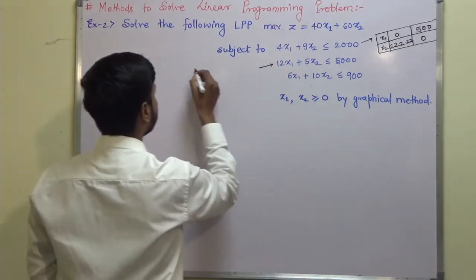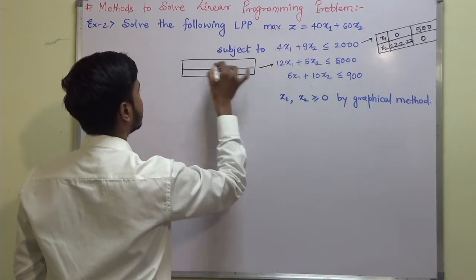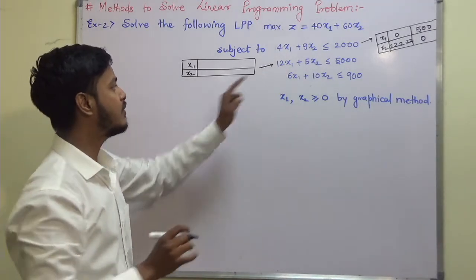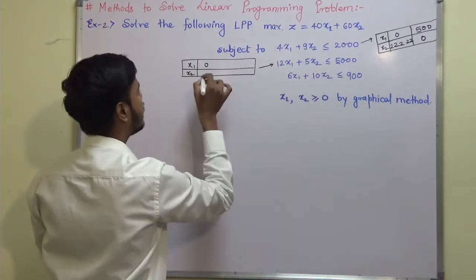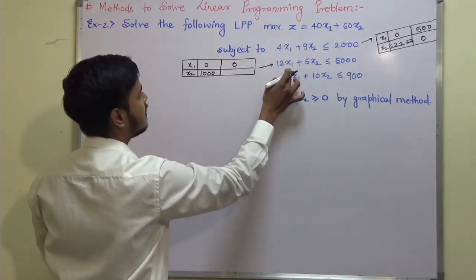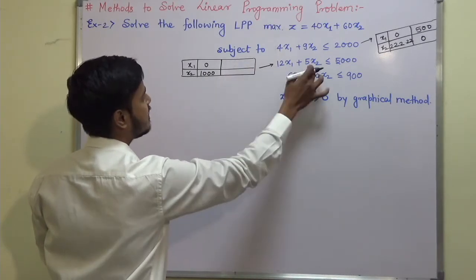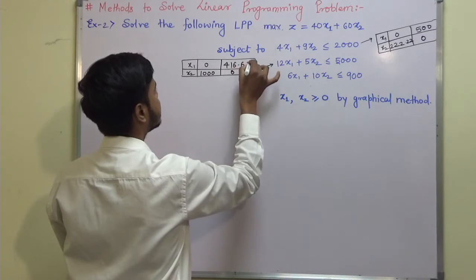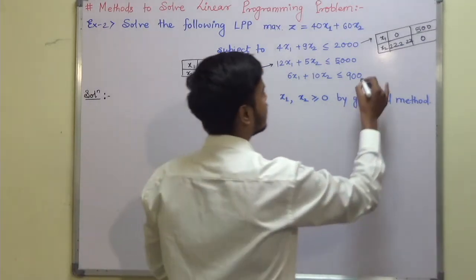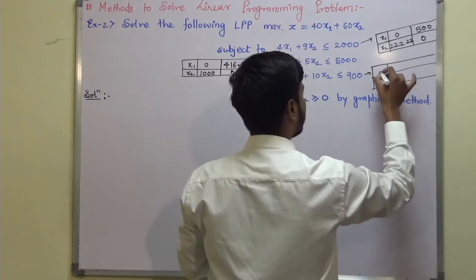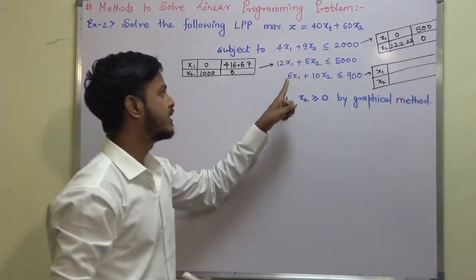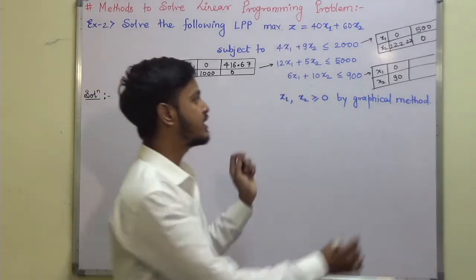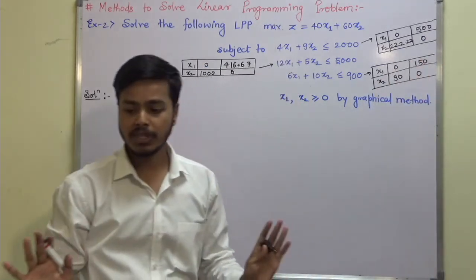For the second constraint, 12x1 + 5x2 = 5000: put x1 = 0, we get x2 = 1000. Put x2 = 0, we get x1 = 416.67. For the third constraint, 6x1 + 10x2 = 900: put x1 = 0, we get x2 = 90. Put x2 = 0, we get x1 = 150. Now we have all the points needed to draw the lines.